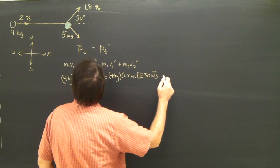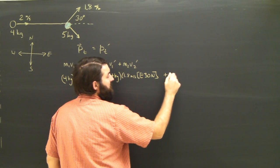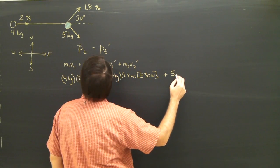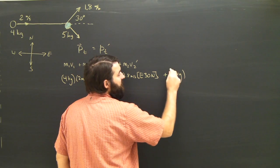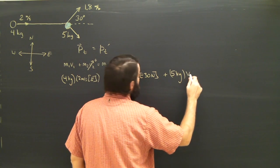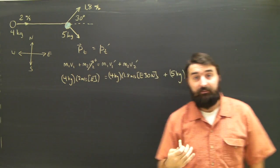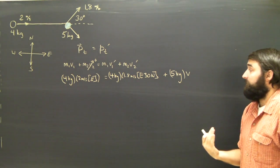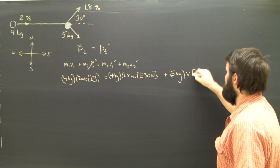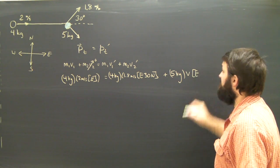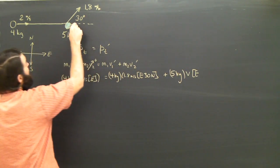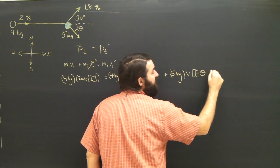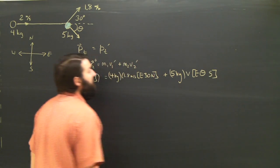The other object has an unknown velocity, but it has a mass of 5 kilograms. And we don't know exactly what direction it's going in, that's the question. But we do know that it will be east some degrees south. So I'll call this theta, and I'll say east theta south.